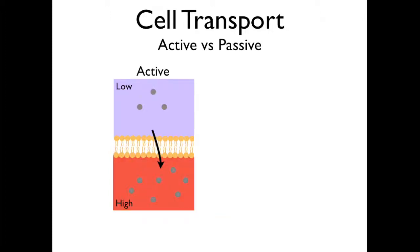Active transport is the movement of particles from areas of low concentration to high concentration. Because particles are moving up their concentration gradient, energy, usually in the form of ATP, is required.